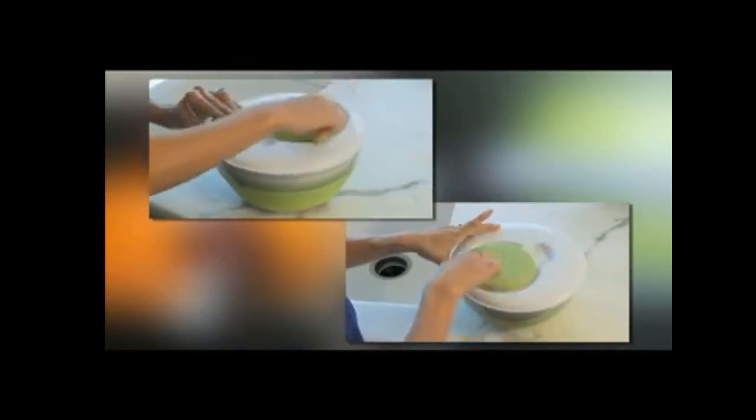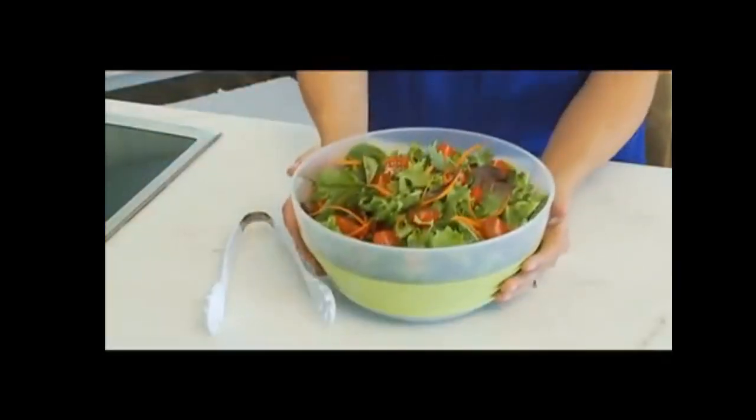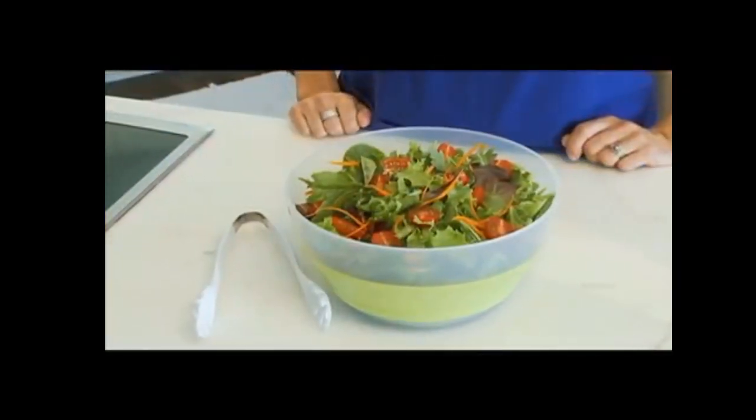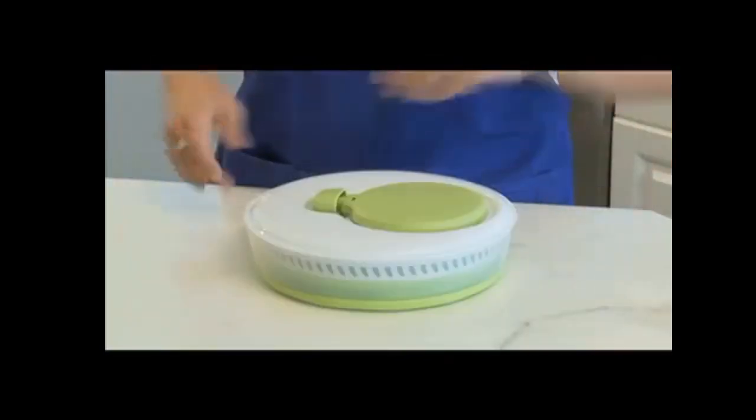In testing, our reviewer found it actually reduces to just three inches when fully collapsed. Storage could not be more convenient. The lid utilizes a large knob that operates the spinner in both clockwise and counterclockwise directions and it stops on the spot via the built-in brake.